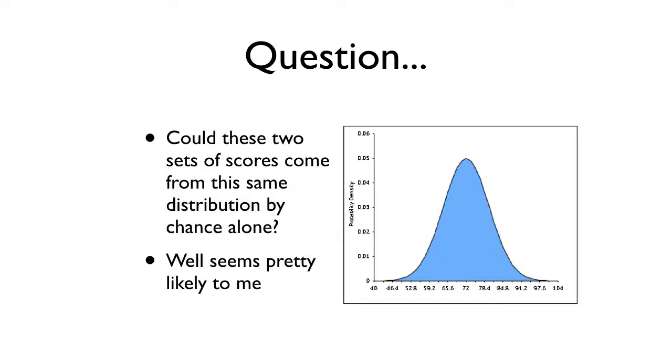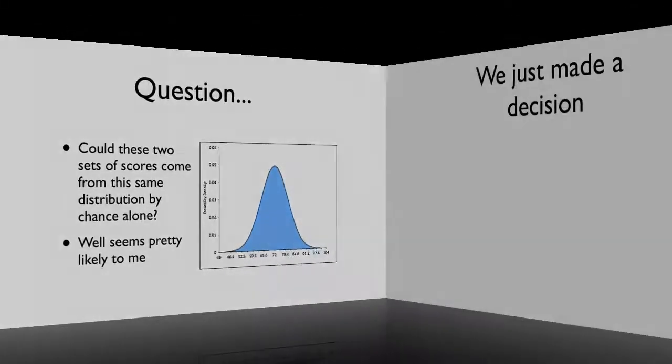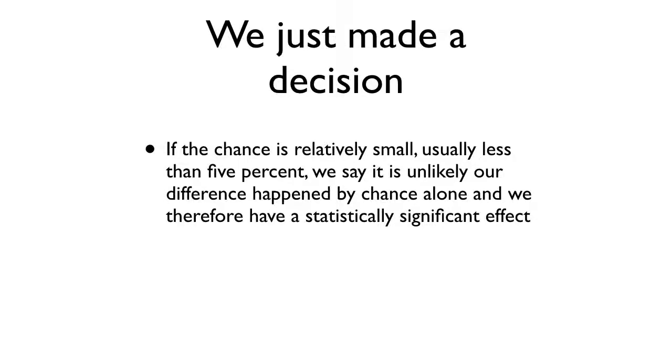So you can do it a bunch of times, do an infinite number of times doing flips of ten times. At some point though, if you keep getting ten out of ten all the time, that's a fixed coin. So what I've just done is I've made a decision here and I think you've all agreed that those two sets of scores could come from that distribution. Again, we don't tend to know that distribution in advance.